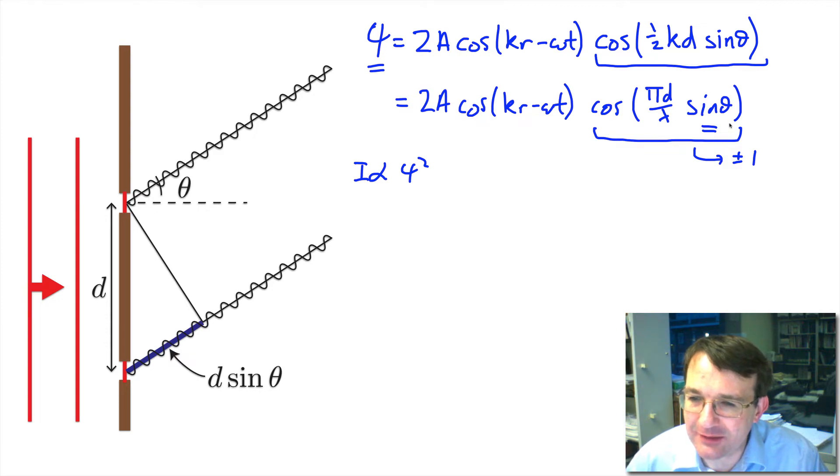When is it going to give me a plus or minus 1? Well it's going to be when this argument here for the cosine is equal to an integer number of pi. So I've now got the condition for a maximum that pi times d over lambda times sine theta must equal some integer number of pi.